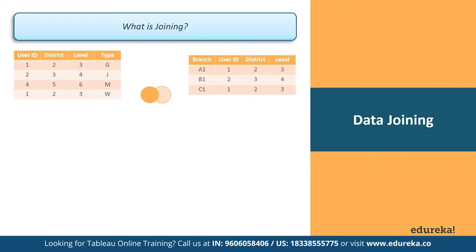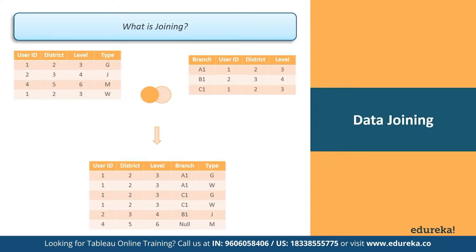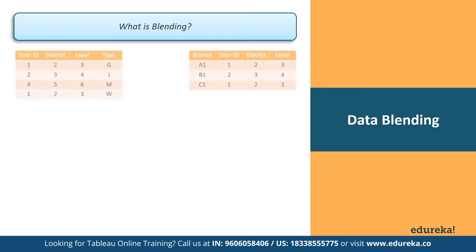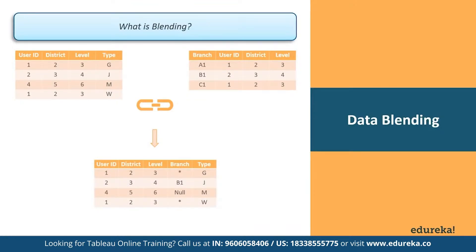How is data blending different? When you use data blending, a query is sent to the database for each data source you're using. The results of these queries, including aggregated data, are sent back to and combined by Tableau. If the linking fields are user ID, blending takes all the data from the left table and supplements it with data from the right table. The view uses all rows from the primary data source and aggregated rows from the secondary data source, based on the dimension of the linking fields. If there are multiple values for rows, an asterisk is shown, and measure values are aggregated based on how the field is aggregated in the view.